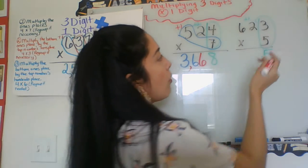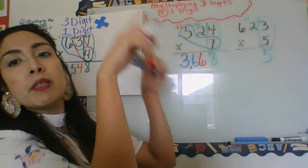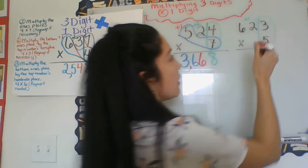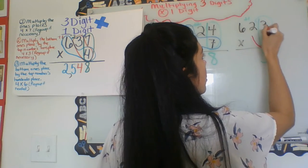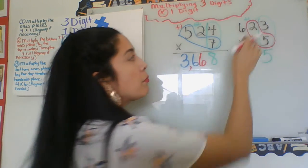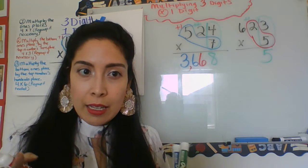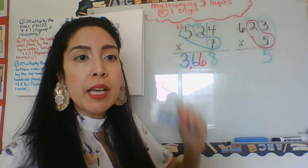Drop the five, carry over a one. Okay, okay, moving on to the next part with a different color. Now I'm going to do the bottom ones times the top tens.